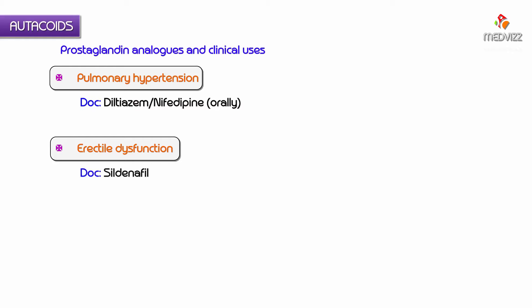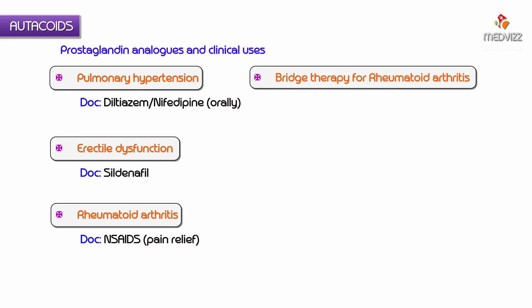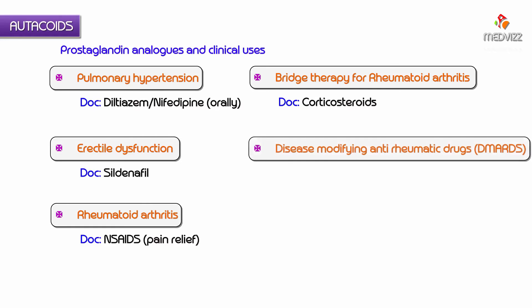For rheumatoid arthritis: the drug of choice for pain relief is NSAIDs. The drug of choice considered as bridge therapy for rheumatoid arthritis is corticosteroids. The actual treatment uses DMARDs — disease-modifying anti-rheumatic drugs. The drug of choice DMARD for rheumatoid arthritis is methotrexate.